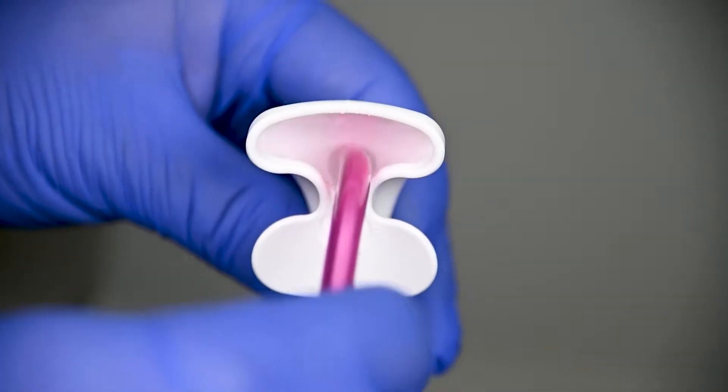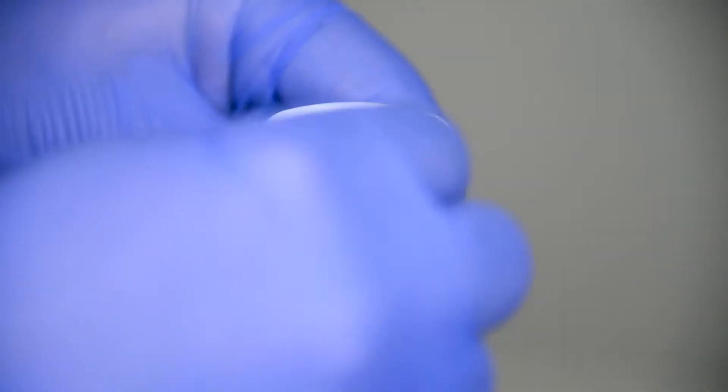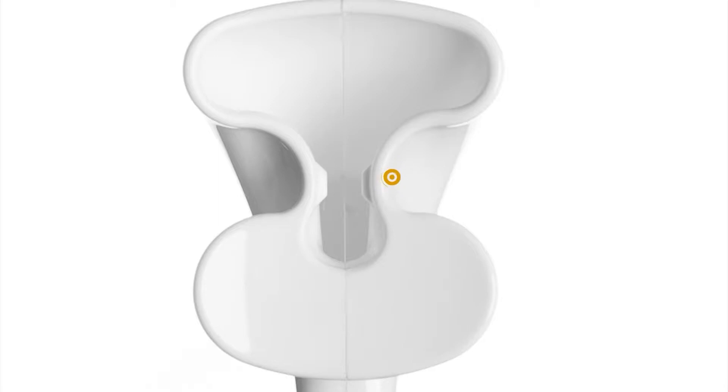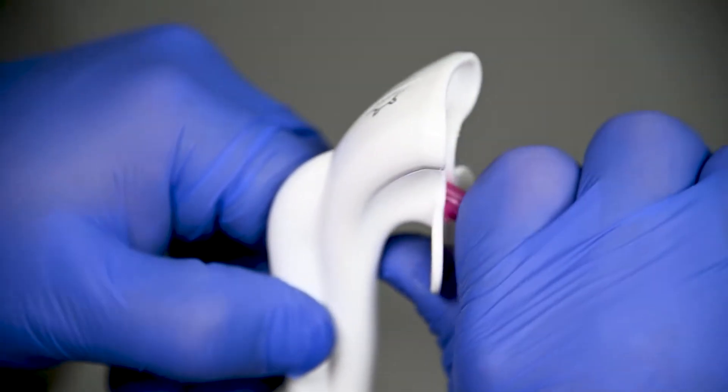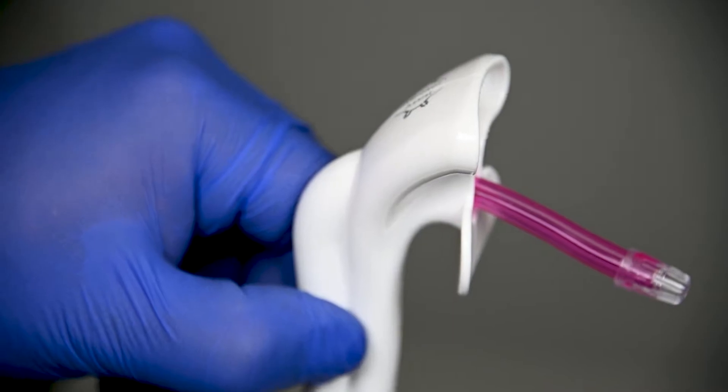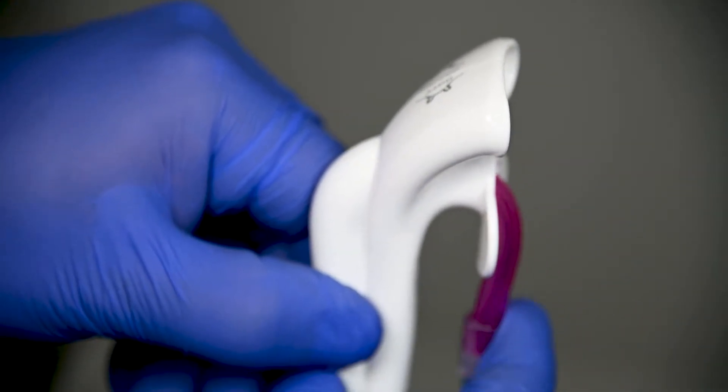It starts by fully inserting the disposable saliva ejector into the posterior channel of the Aerosol Cyst. Once fully inserted, pull down the saliva ejector past the pinch point to lock it into place by placing your thumb on the buckle plate and holding the saliva ejector with the other fingers closest to the aerosol port and pulling down.